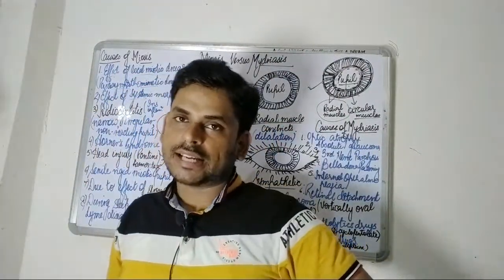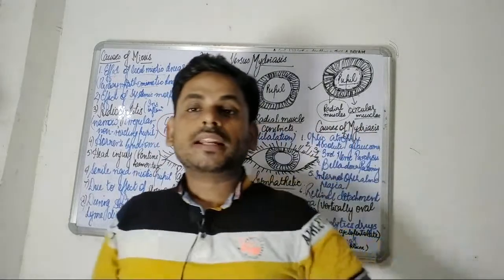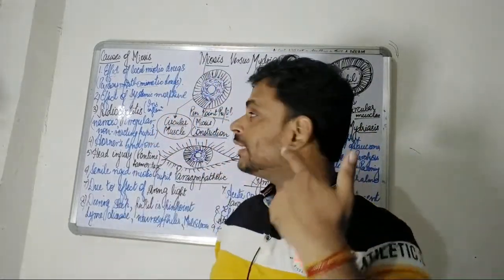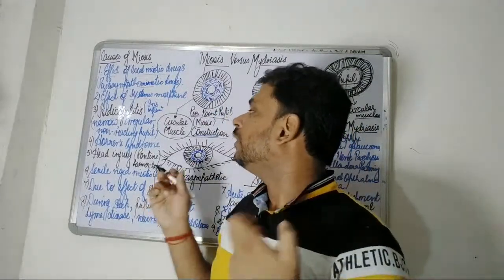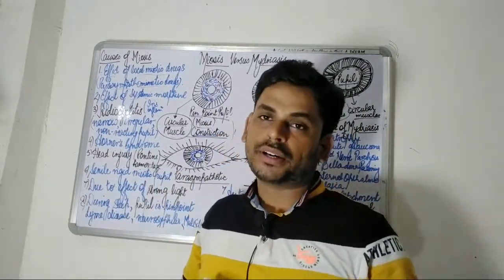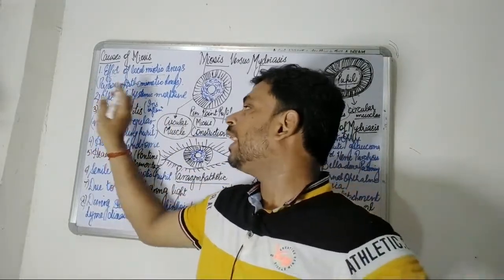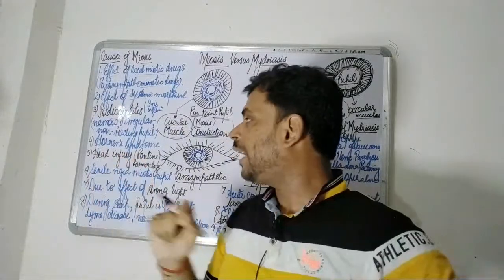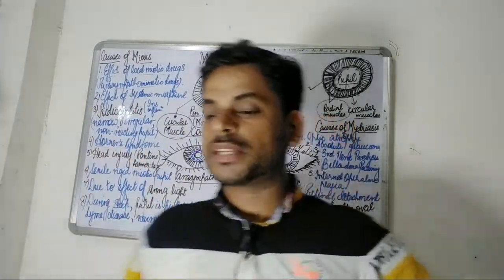The third cause is iridocyclitis — the condition where inflammation of the iris occurs. The iris becomes narrow and irregular, or the pupil becomes non-reactive. This inflammation of the iris leads to miosis.